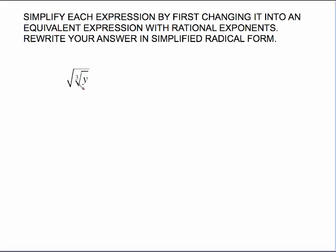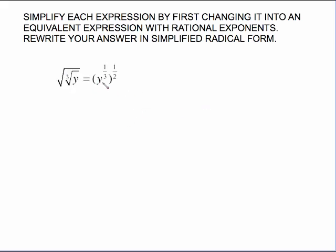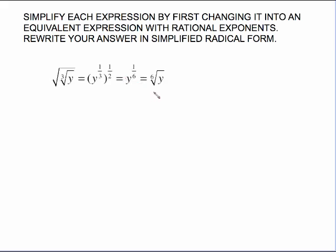Here's something that looks kind of strange: the square root of the cube root of y. We need to think about what this means. The square root means, in rational exponent form, something to the one-half. The something here is the cube root of y, which in rational exponent form is y to the one-third. So more neatly, this is y to the one-third raised to the one-half. Using the exponent law — keep the base and multiply — gives us y to the one-sixth, which converts to radical form as the sixth root of y.